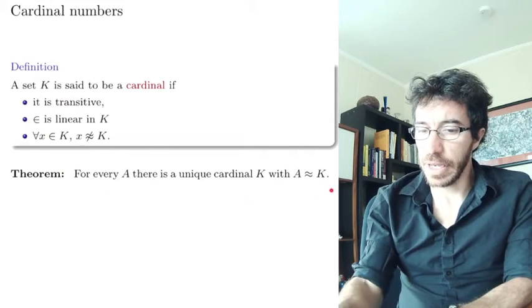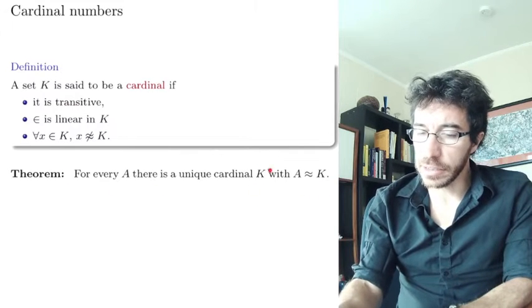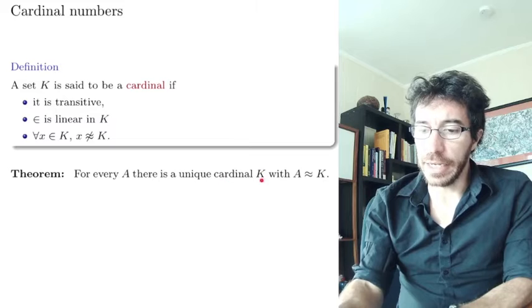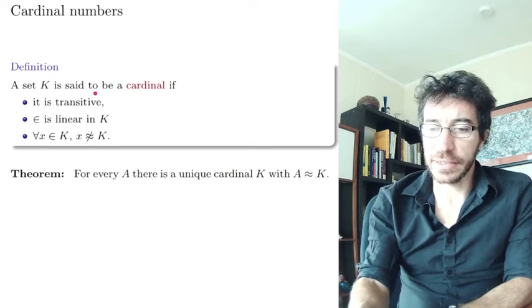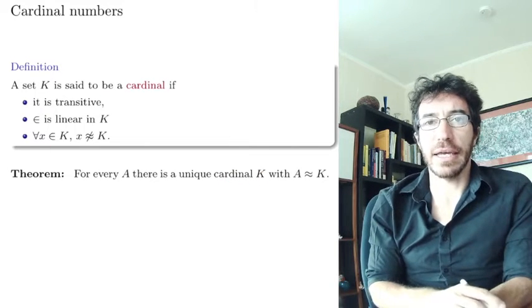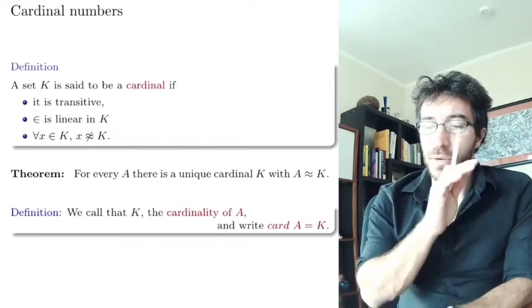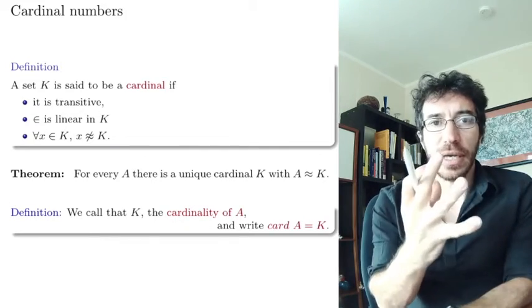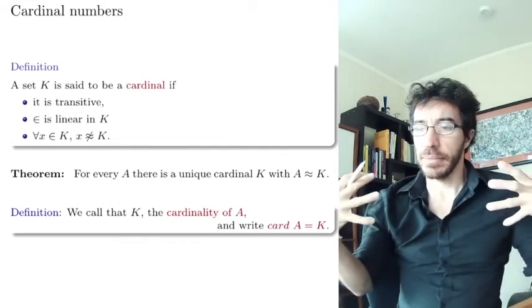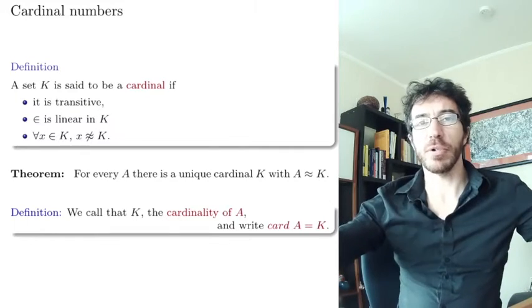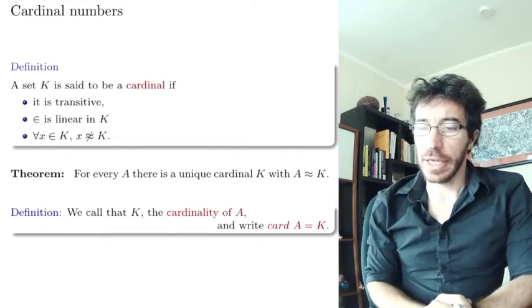For now, let's just stay with this. Every set A has a unique object K satisfying these things that is equinumerous to it. And then we're going to use that unique element to represent the whole equivalence class of equinumerosity.